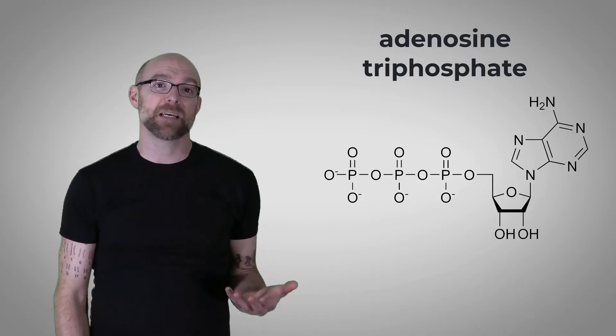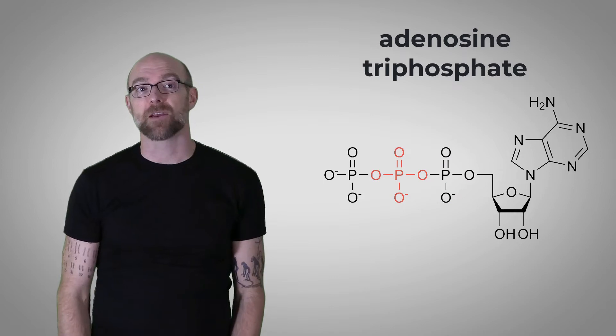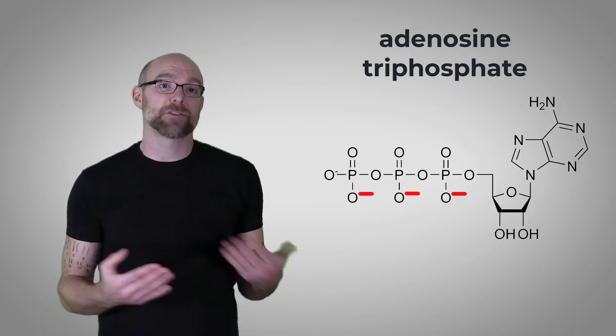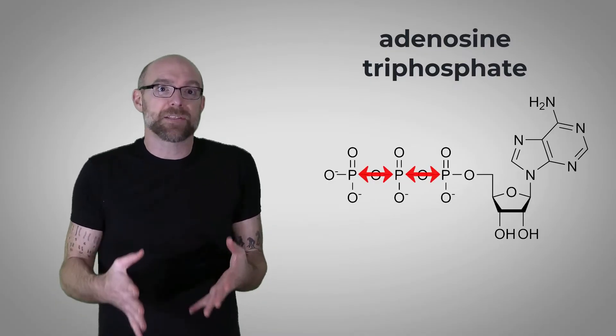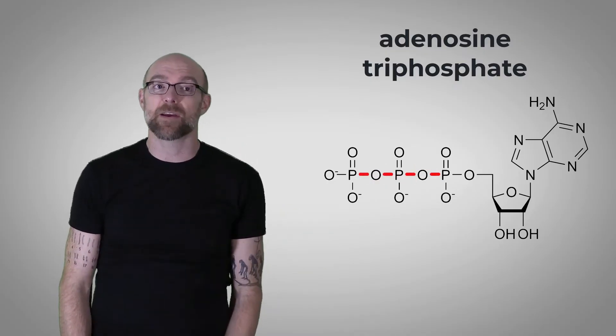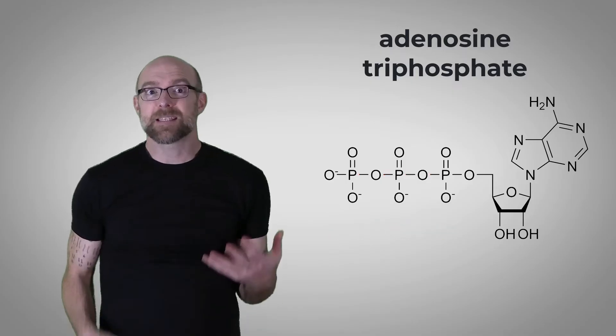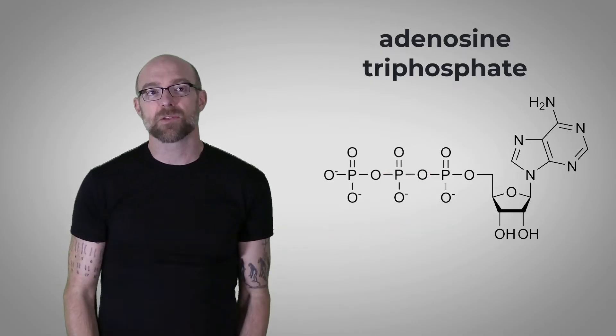The key feature of ATP is these three phosphate groups. They all carry a negative charge, and that means that they sort of repel each other. This makes the bonds that hold them together very weak. It only takes a little bit of energy to break those bonds apart.